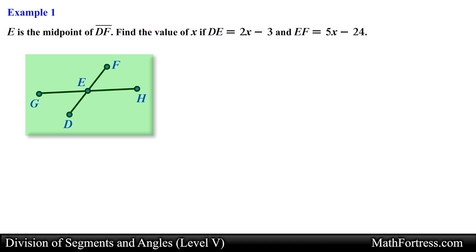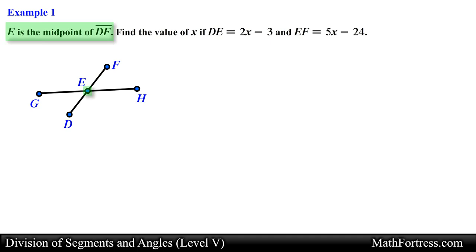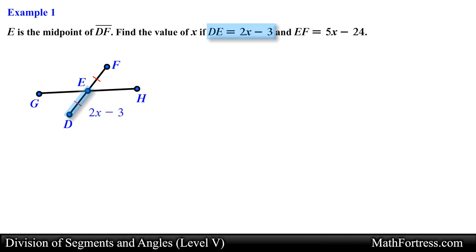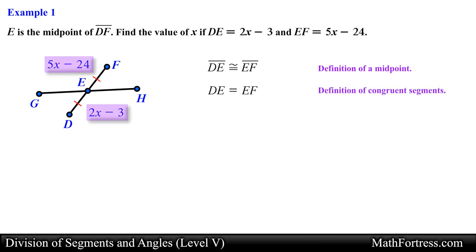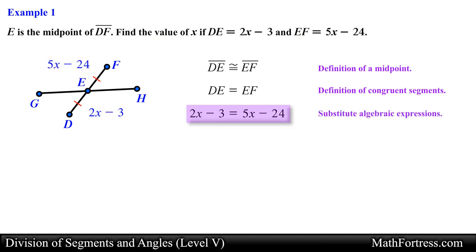Let's start by marking the diagram with the given information. We know that point E is the midpoint of segment DF. This means that segment DE and segment EF are congruent, so we mark these two segments with a single tick mark. We also know that the length of segment DE equals 2x minus 3 and the length of segment EF equals 5x minus 24. Since both segments are congruent, we can set these two algebraic expressions equal to one another. Now we have an equation we can solve for x.